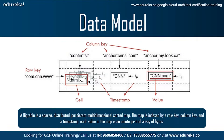Now the third key is timestamps. Each cell in a Bigtable can contain multiple versions of the same data, and these versions are indexed by timestamp. Bigtable timestamps are 64-bit integers. They can be assigned by Bigtable, in which case they represent real time in microseconds, or be explicitly assigned by client applications. Applications that need to avoid collisions must generate unique timestamps themselves. Different versions of a cell are stored in decreasing timestamp order so that the most recent versions can be read first. To make the management of version data less burdensome, we support two per-column-family settings that tell Bigtable to garbage collect cell versions automatically. The client can specify either that only the last N versions of a cell be kept, or that only new enough versions be kept — for example, only keep values written in the last seven days. In our web table example, we set the timestamps of the crawled pages stored in the contents column to the times at which those page versions were actually crawled. The garbage collection mechanism lets us keep only the most recent three versions of every page.